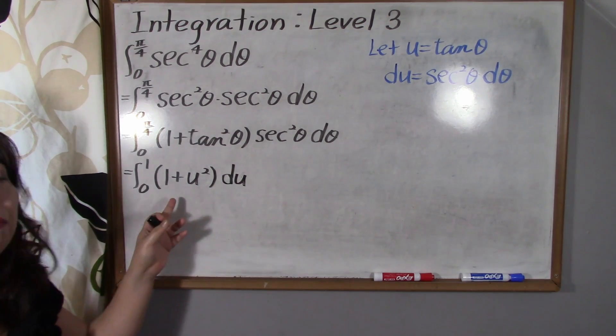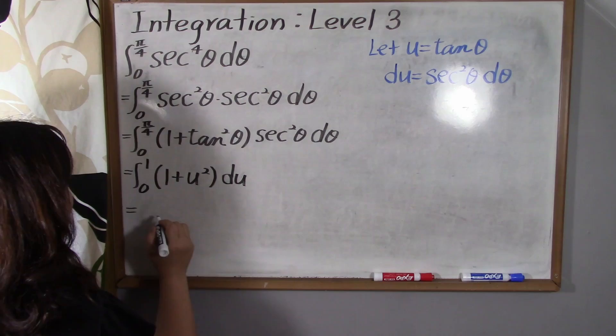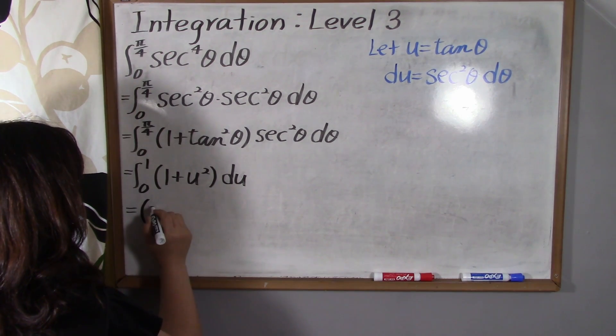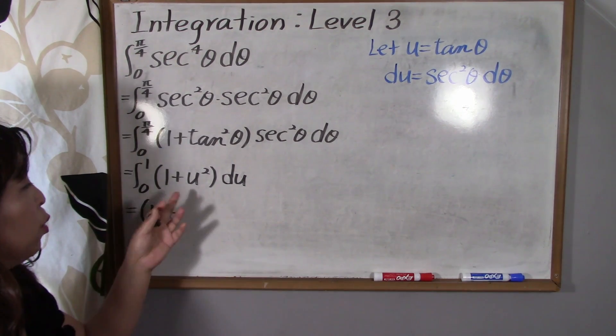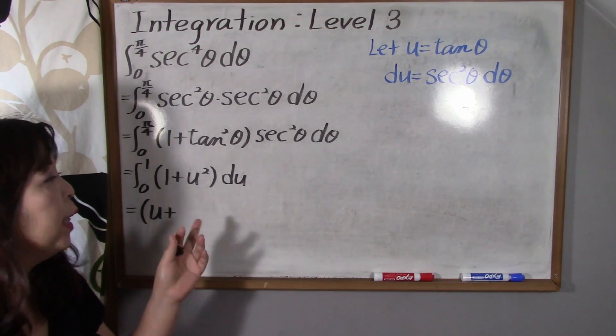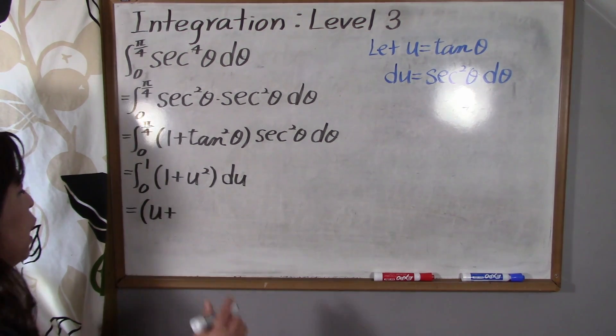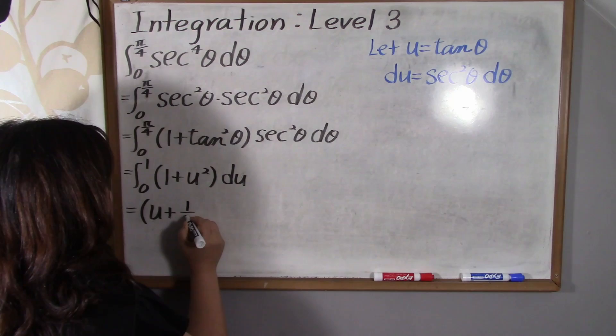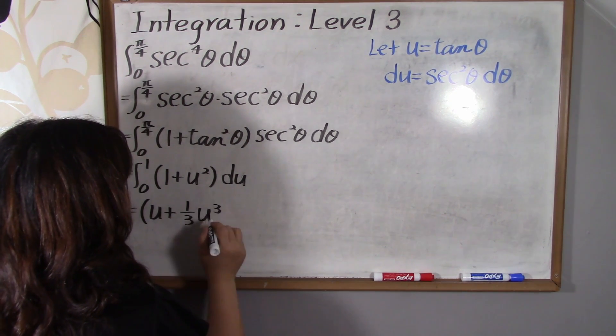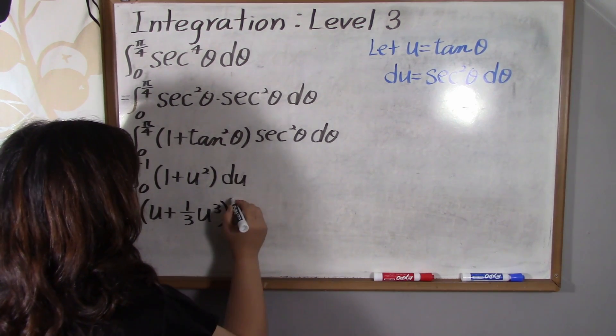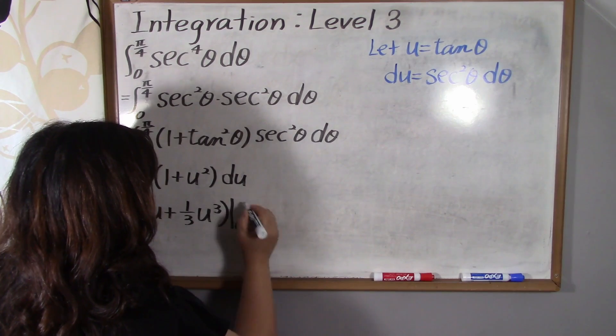And now, we're gonna integrate 1 plus u squared. So it's equal to parenthesis u plus, integral of 1 is u. How about integral of u squared? We're gonna raise the power 2 by 1, so that is 3. We're gonna divide by 3, so 1 over 3, u to the third power, u cubed. And then boundaries are from 0 to 1.